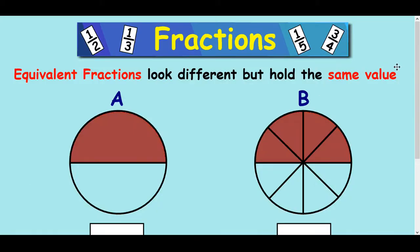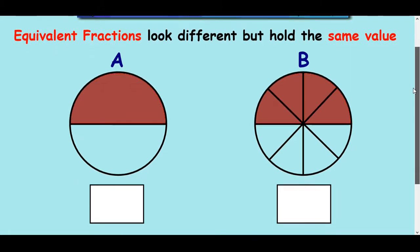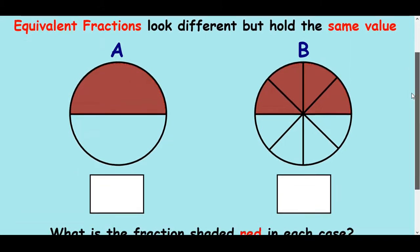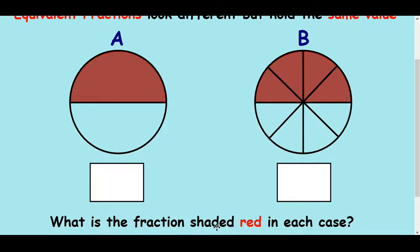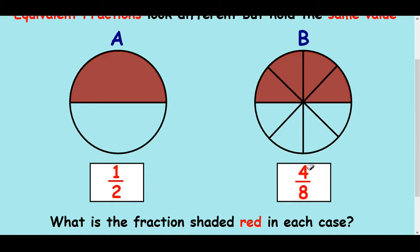But equivalent fractions don't need to look like that — they can be in circular format or any format. If you look at this first shape here, we can see there's a half circle coloured in. There's also a half circle over here coloured in, but we could call it something else: four bits are coloured in out of a total of eight. So that fraction — four out of eight, or four-eighths — is the same as a half. It's exactly the same.